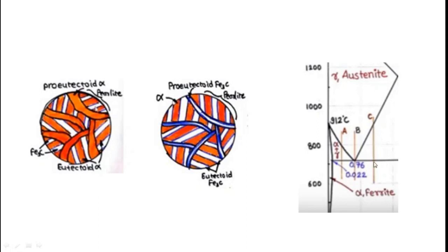For example, if the carbon percentage is 0.9 weight percent, the microstructure shows only a thin line for Fe3C, because 100% Fe3C occurs at 6.67 weight percentage carbon — very far from 0.9. This is the key difference between the microstructures of hypo eutectoid and hyper eutectoid. In the next video, I will be taking some other questions.